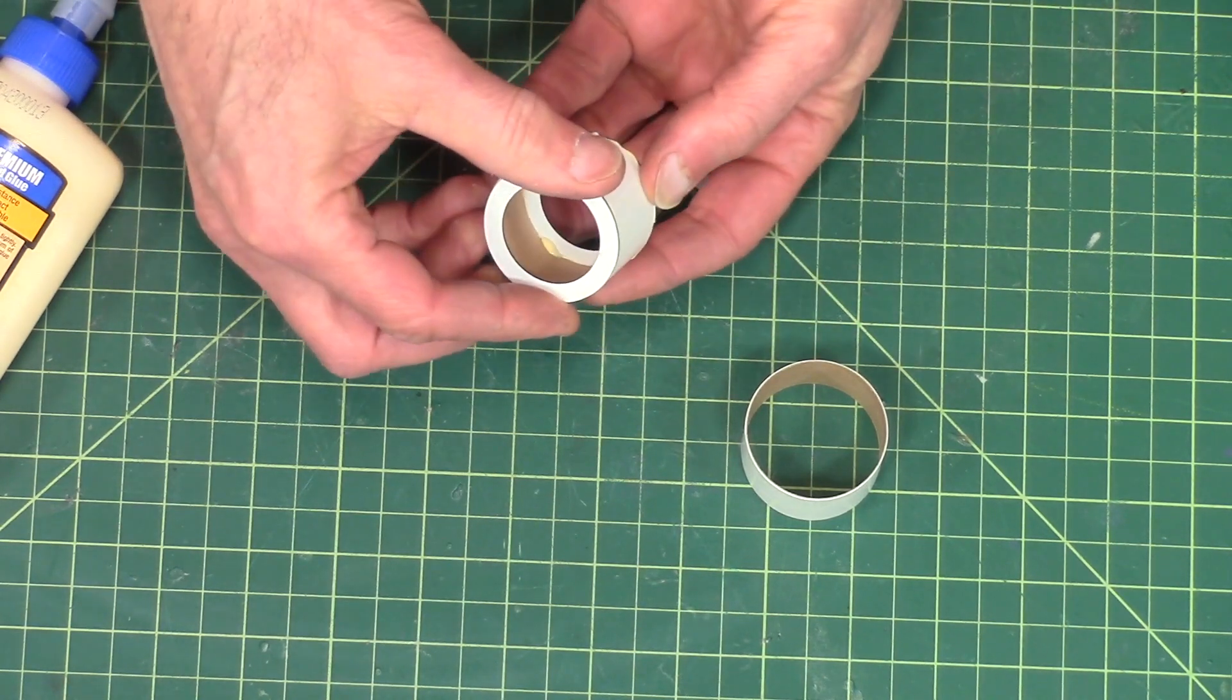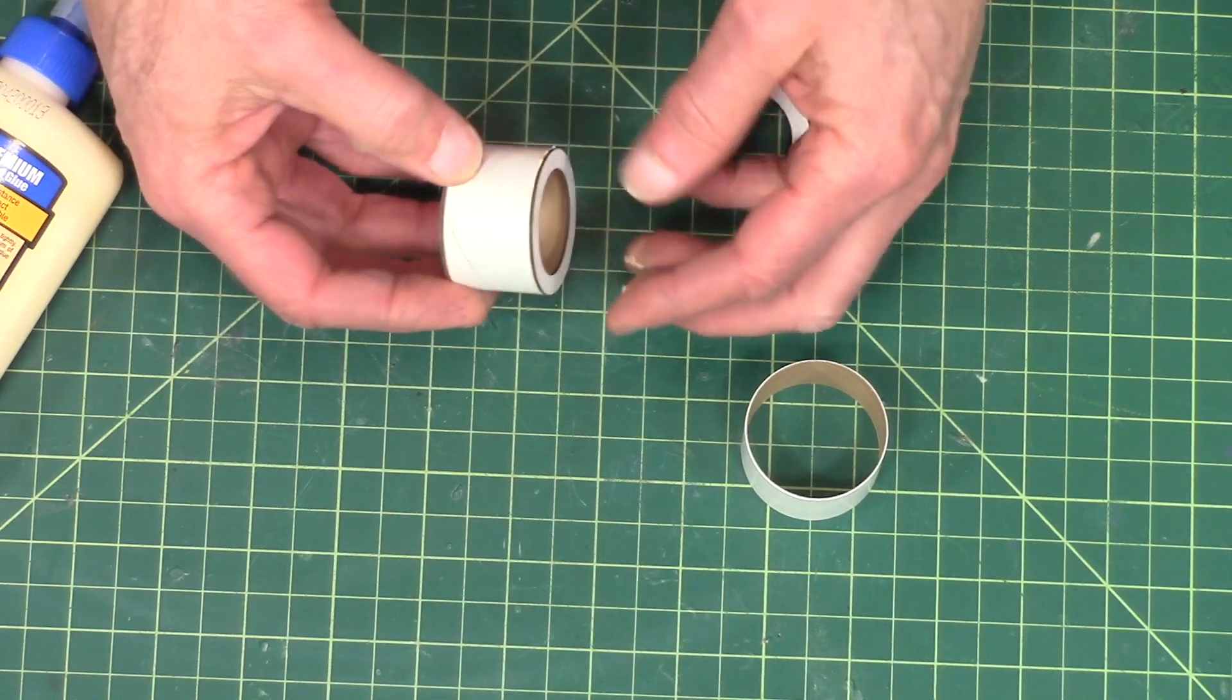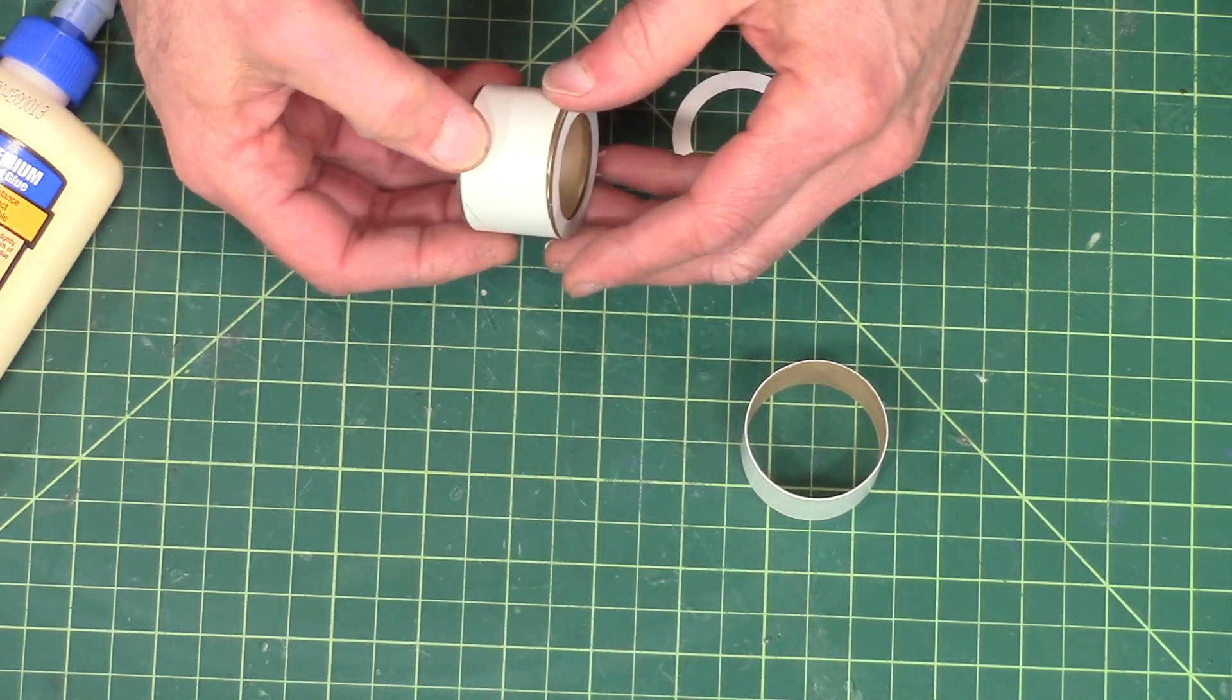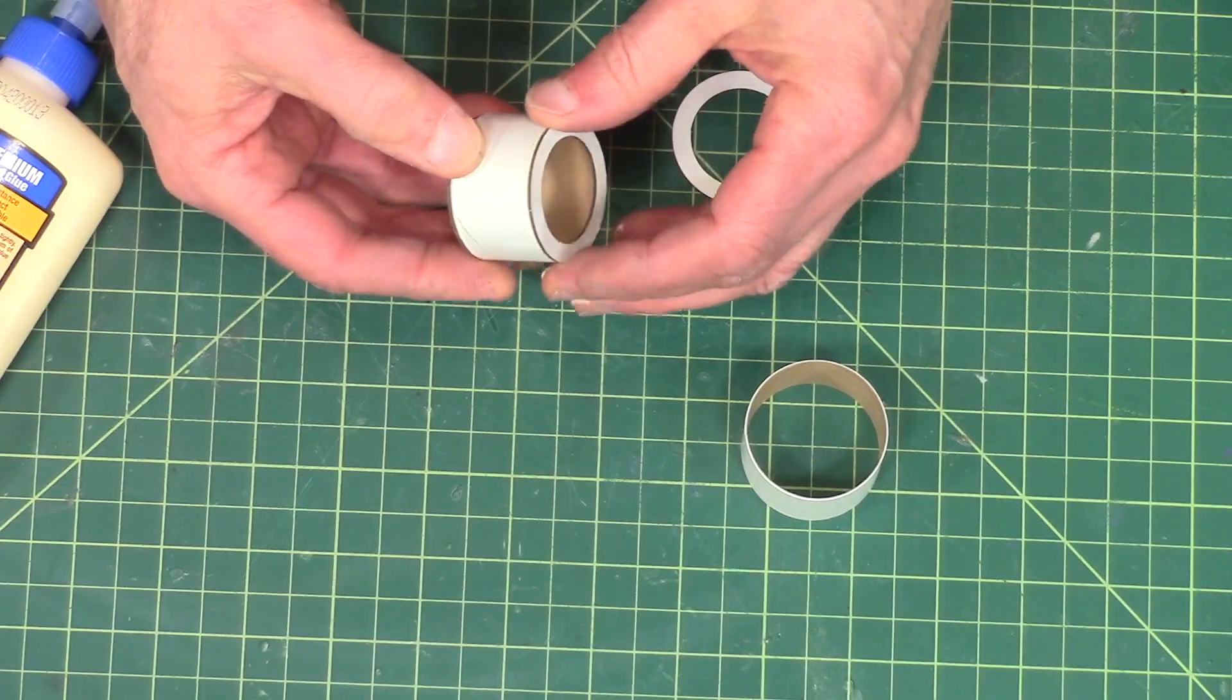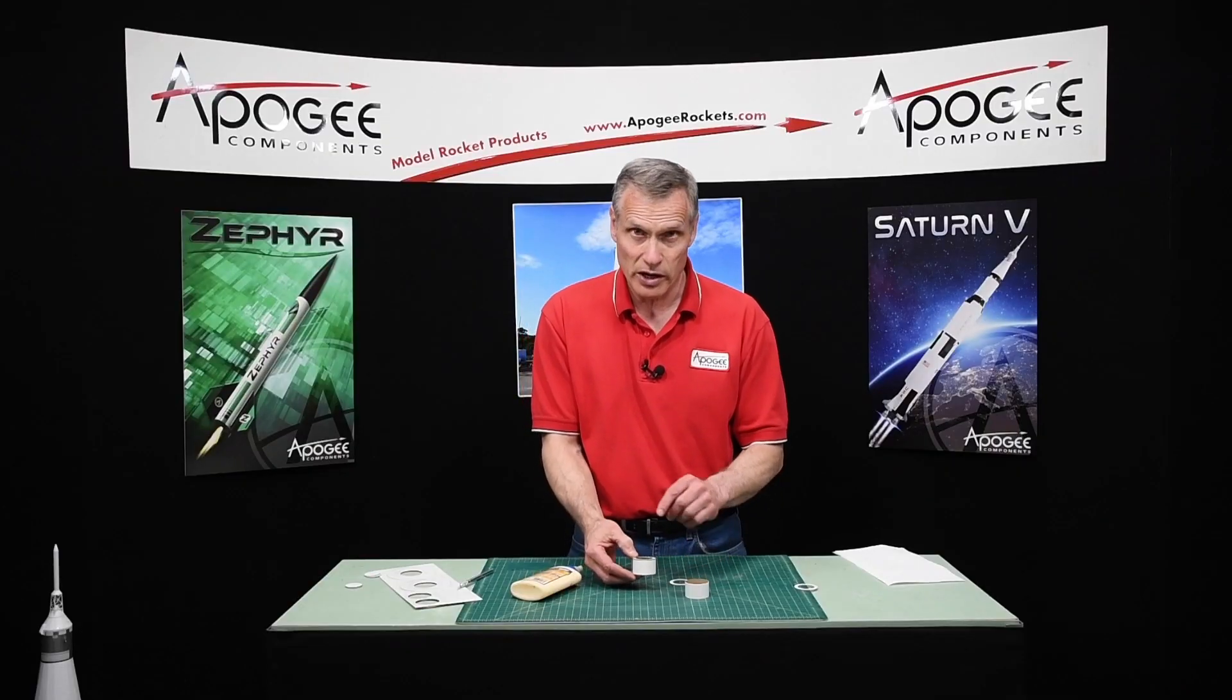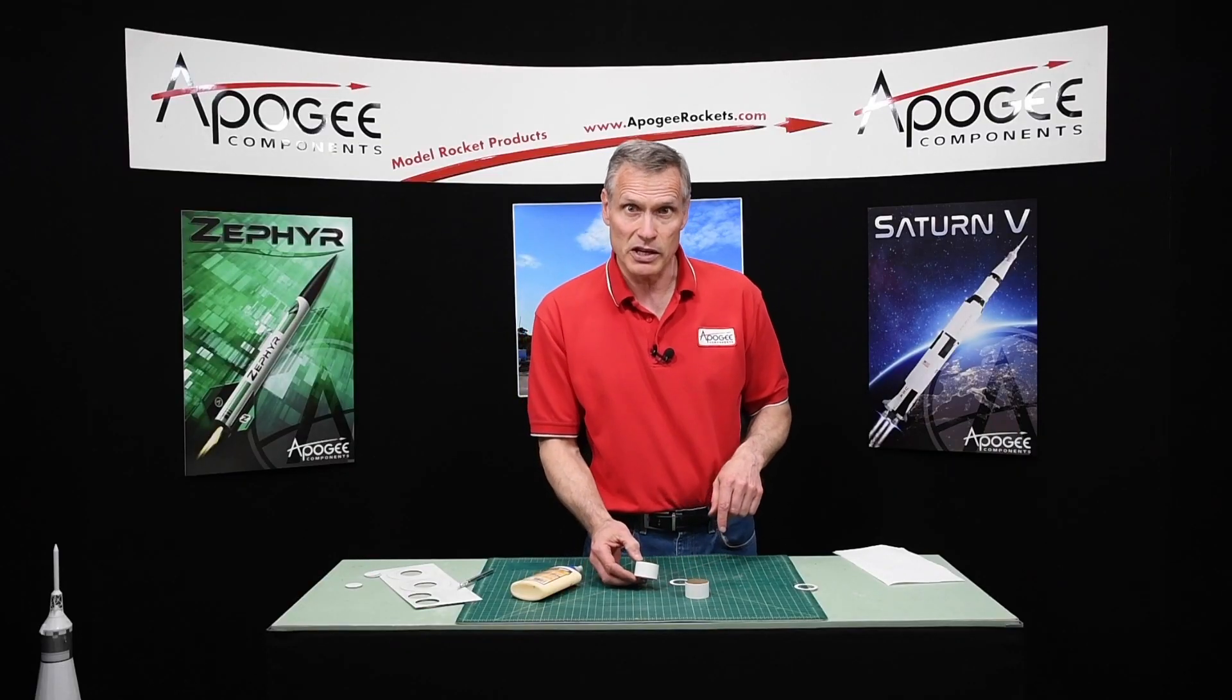The engine mount tube will go right through the middle of that, so we do want to keep these attached. I'm just going to glue them up and let them dry. If you want, you can go ahead and put fillets on the inside too.